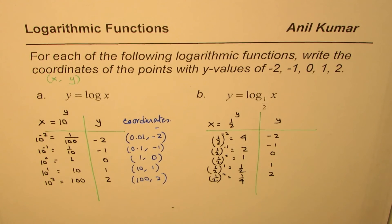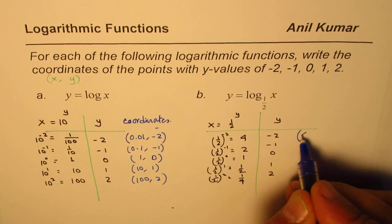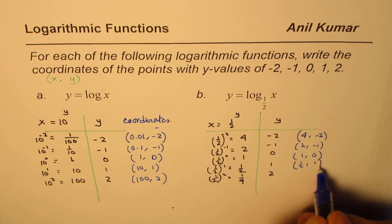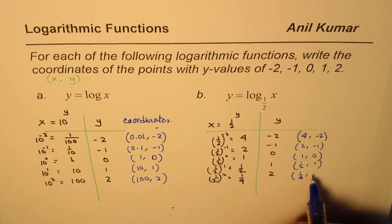And so, we get our coordinate points as 4 minus 2, 2 minus 1, 1, 0, half 1, and 1 over 4, 2.